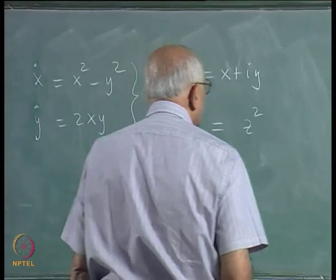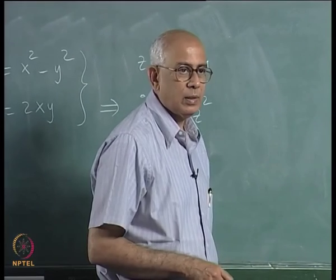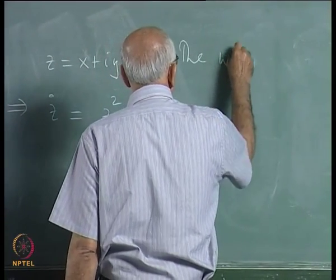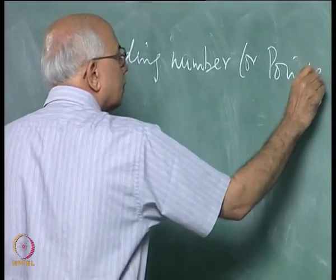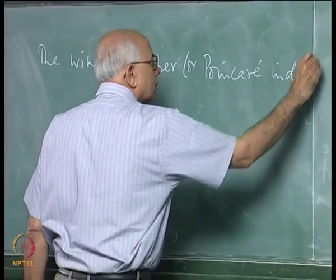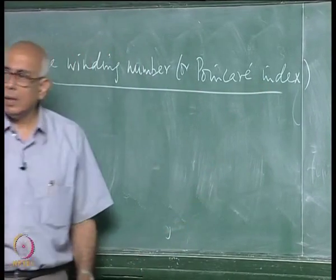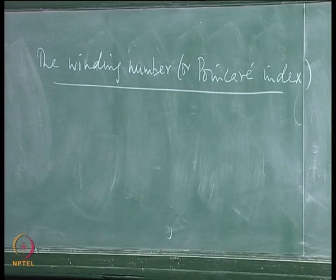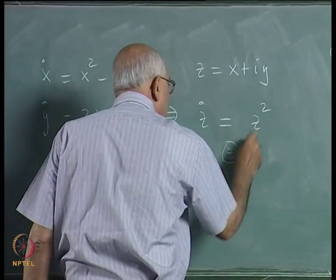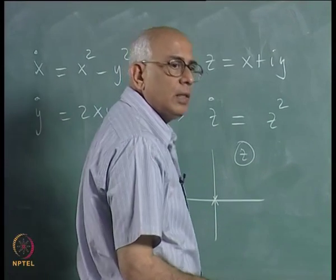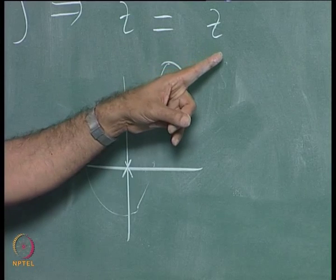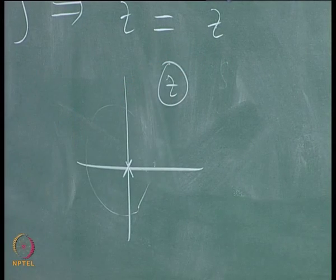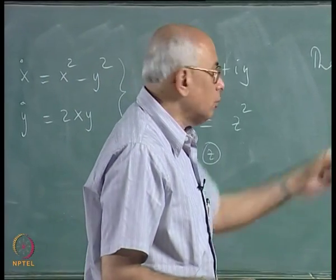This brings us to the concept of the winding number of a singularity of a planar vector field. The winding number, or Poincaré index, of a planar vector field is defined as follows. In the z-plane, there is a singularity at the origin such that if I move around once in the z-plane and increase the argument of z by 2π, the argument of this vector field on the right-hand side increases by 4π because it is the square — and this has a specific implication for what I am about to say.